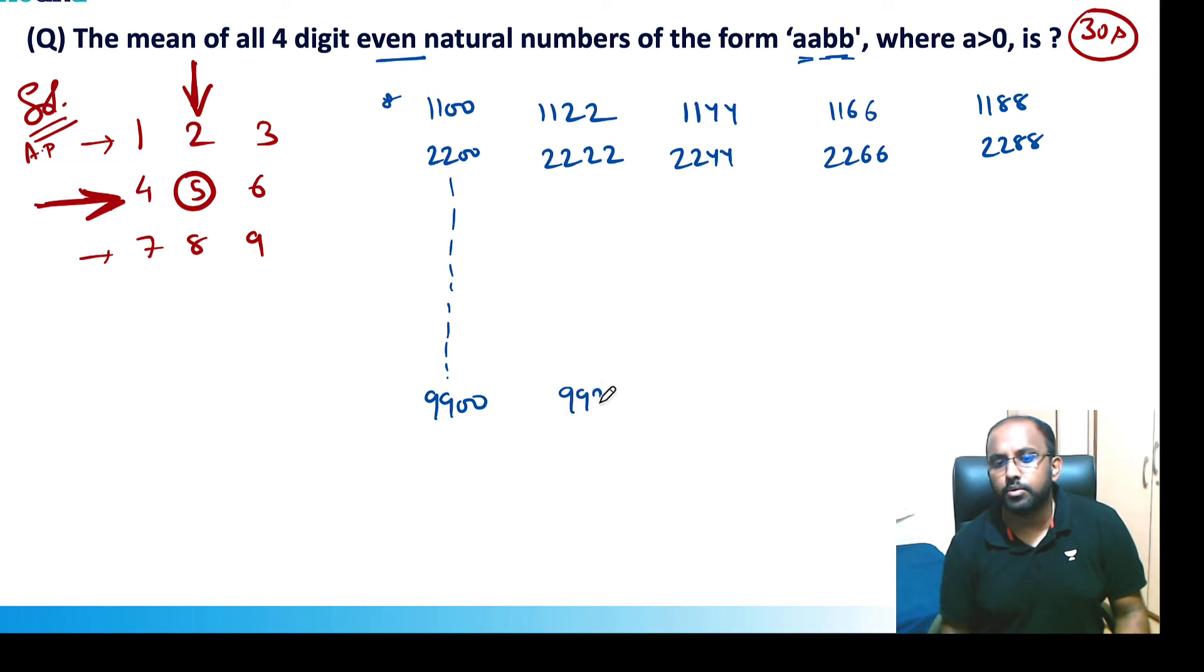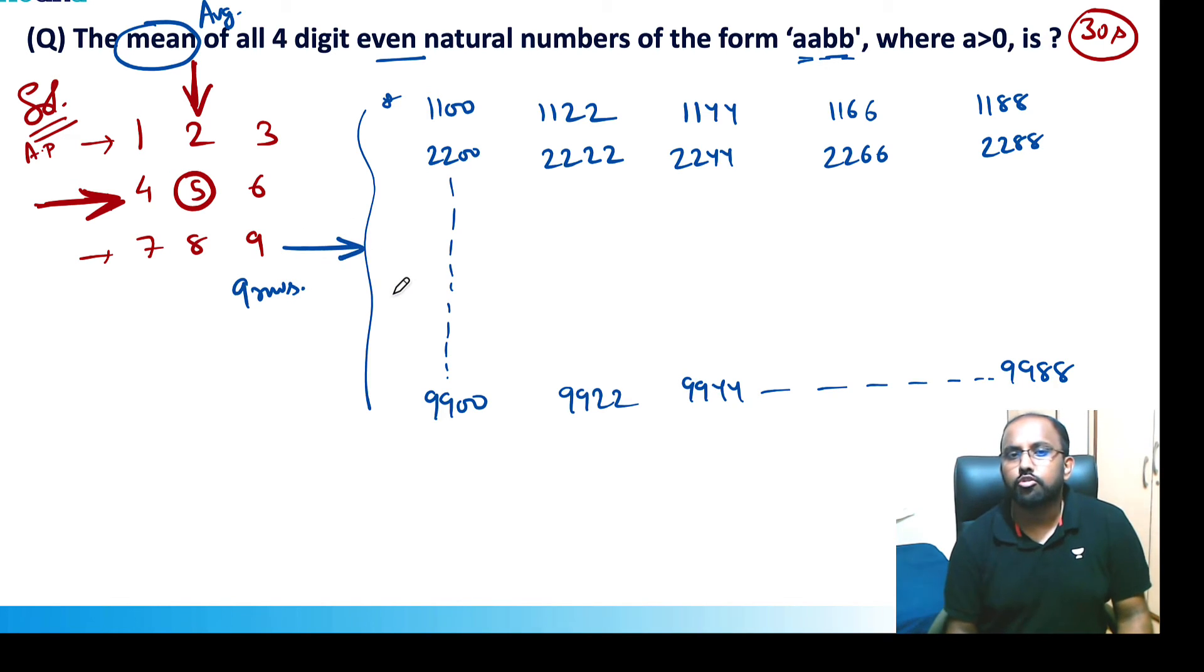What is the average? To find the average, we have nine rows here. In these nine rows, what is the middle row? The middle row is the fifth row, which is 5500. This is the fifth row.